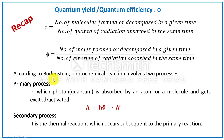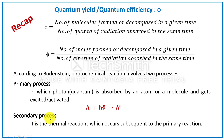According to Bodenstein, every photochemical reaction involves two processes. In the primary process, an atom or molecule absorbs a quantum of energy and gets activated. In the secondary process, this activated molecule undergoes reaction to form product.